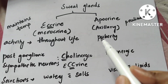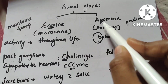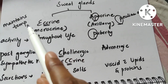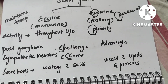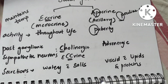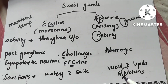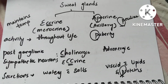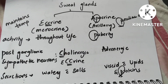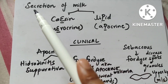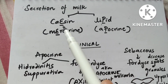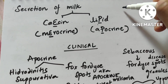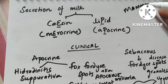Eccrine glands maintain temperature, whereas apocrine glands are for the peculiar odor of sweat. Everything is P in apocrine glands — the spelling has P, it is more active in puberty, and it gives peculiar odor to the sweat. Activity of eccrine sweat glands is throughout life. Secretions of eccrine sweat glands are watery with salts, and in apocrine glands it is again P — proteins and lipids. Milk has a composition of casein and lipids: casein is secreted in merocrine manner, whereas lipids in apocrine manner.